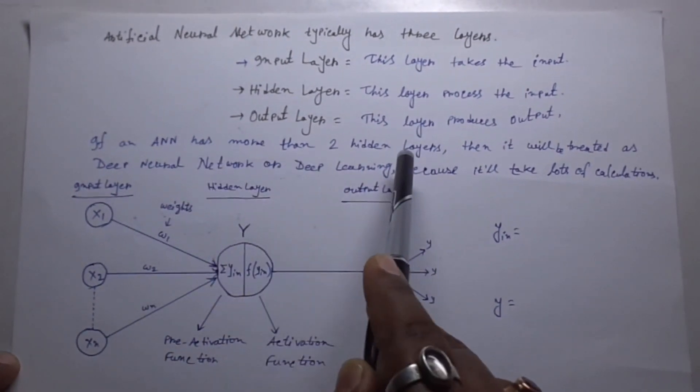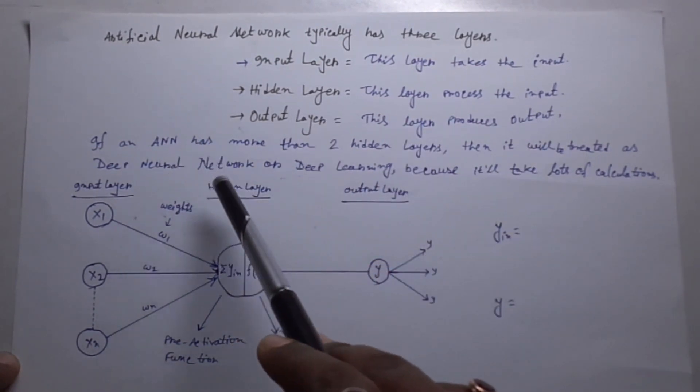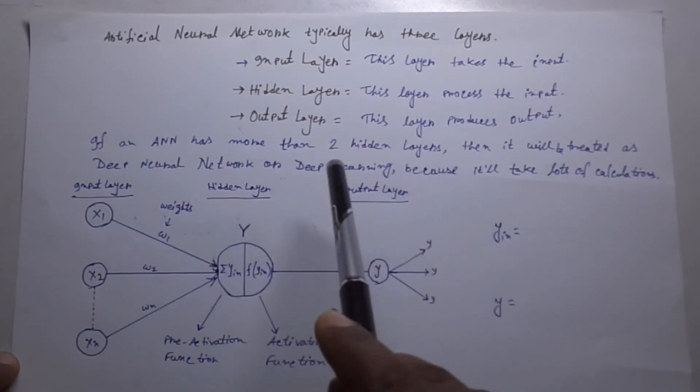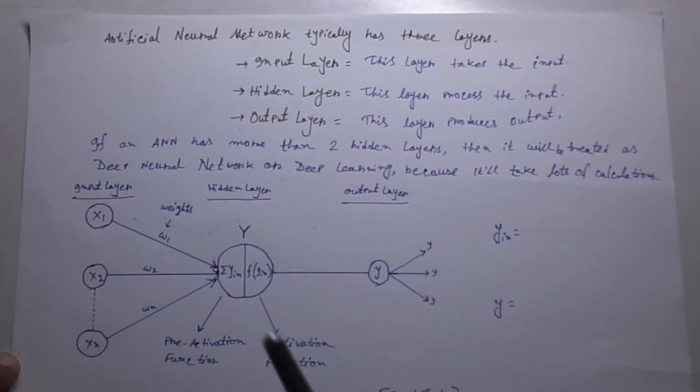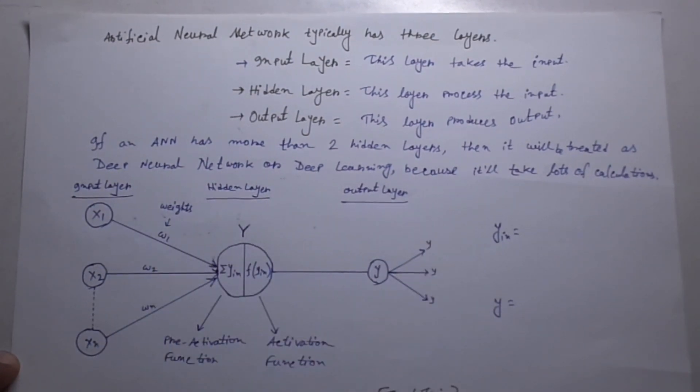If an ANN has more than two hidden layers or three hidden layers then it will be treated as deep neural network or deep learning because it will take lots of computations. And this is the graphical representation of artificial neural network.